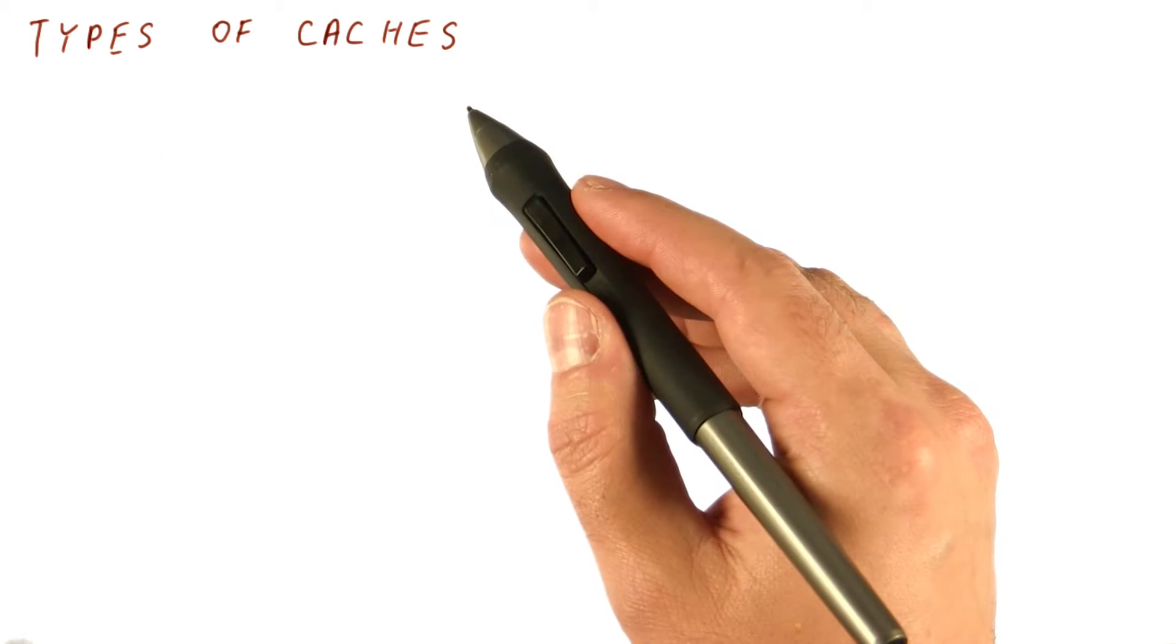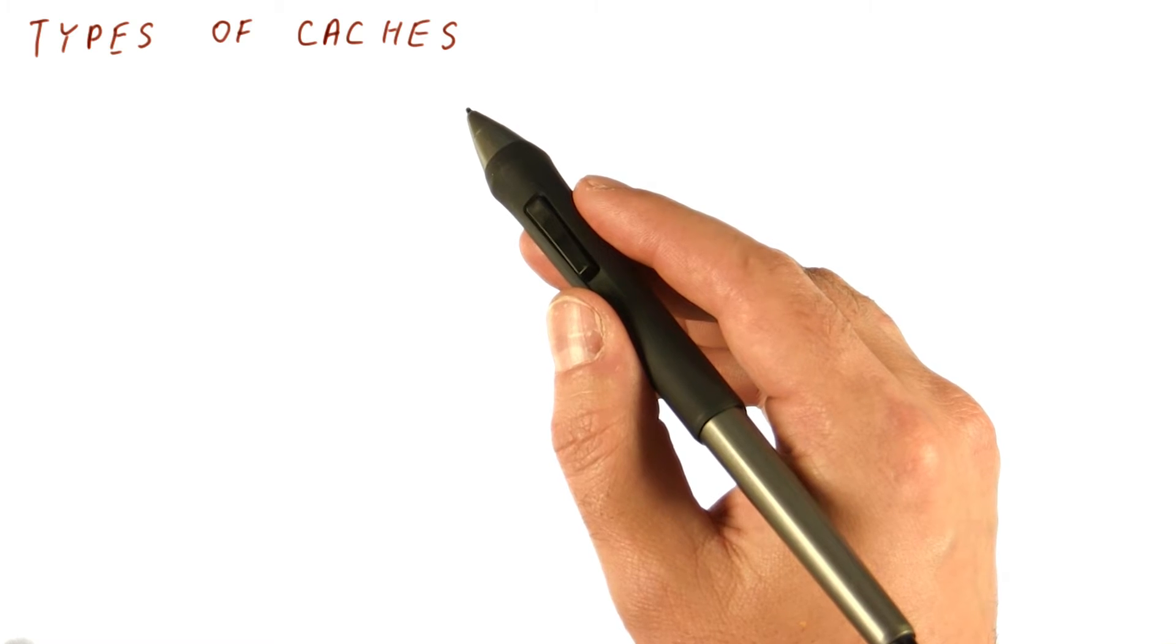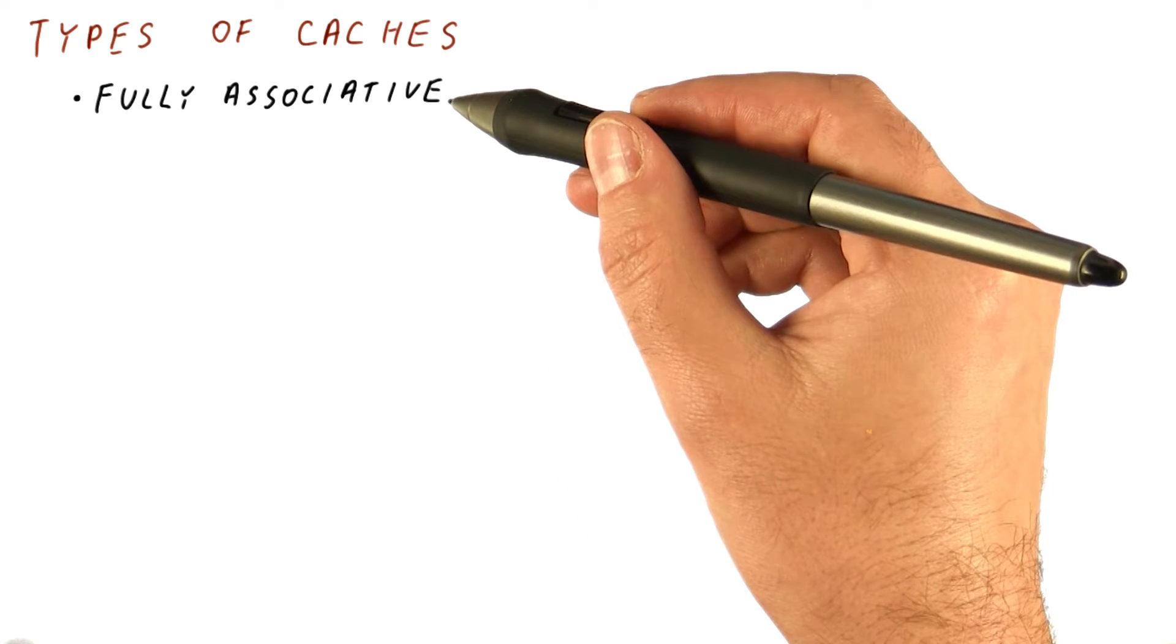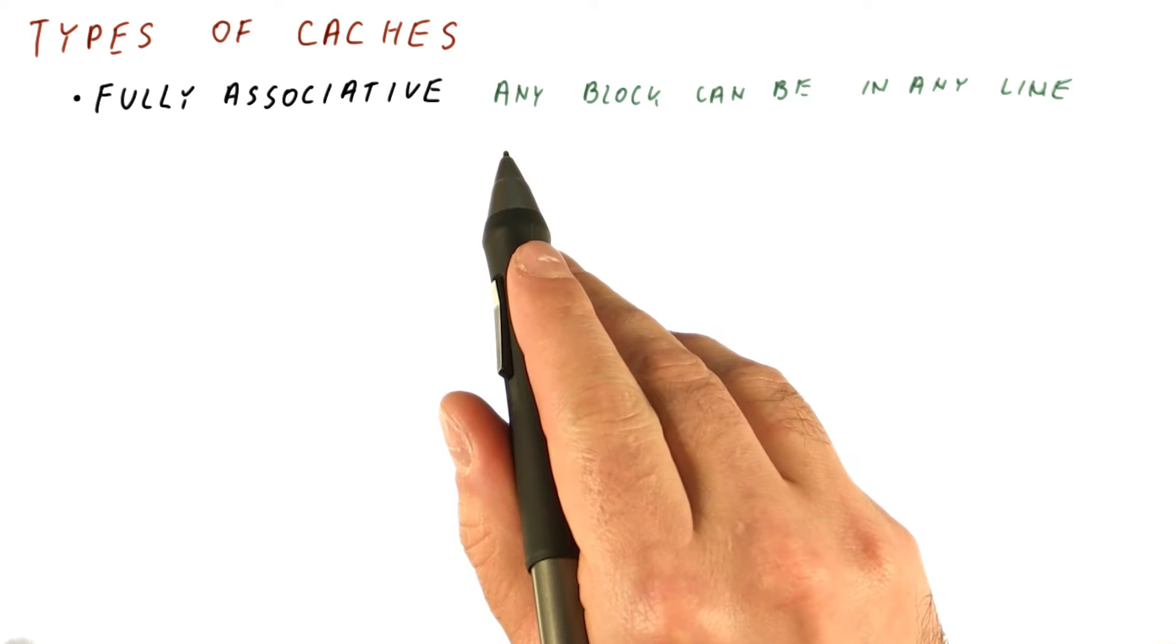There are several types of caches when it comes to which blocks can be placed where in the cache. The cache examples we have seen so far are fully associative caches. In this type of cache,